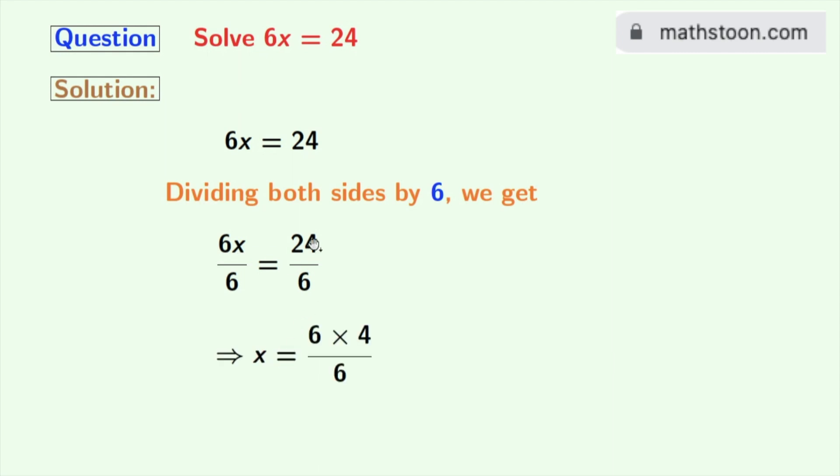And on the right hand side, 24 can be written as 6 times 4, and the denominator 6 remains the same. Again see that 6 gets cancelled. So we are left with 4. Therefore, x is equal to 4 is our final answer.